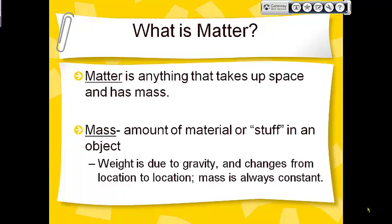What is mass? Mass is the amount of material, stuff, or particles in an object. It is different from weight. Weight is due to gravity — your weight depends on how much gravity is pulling down on you on a particular place or planet. That's why on Earth, your weight is different than it would be on Jupiter, and different on Jupiter than it would be on the moon.